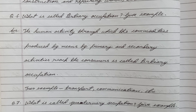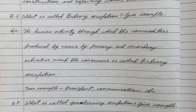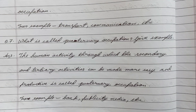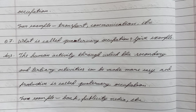Question number six: What is called tertiary occupation? Give an example. Question number seven: The human activity through which secondary and tertiary activities can be made more easy and productive is called quaternary occupation. For example, bank, publicity, media, etc.